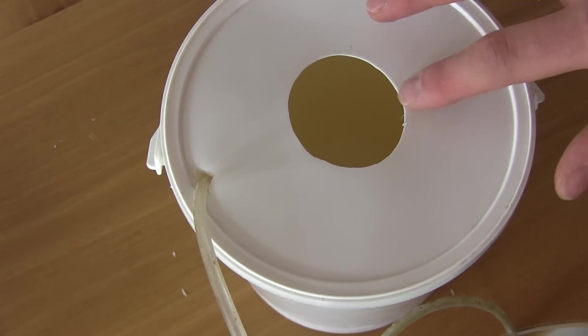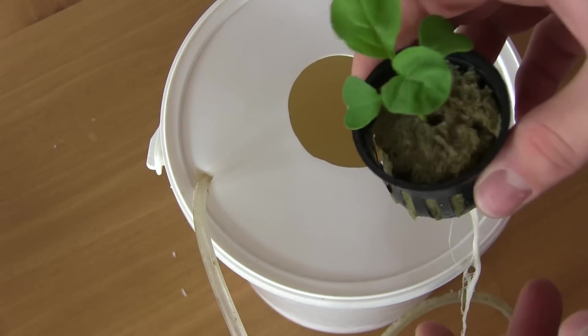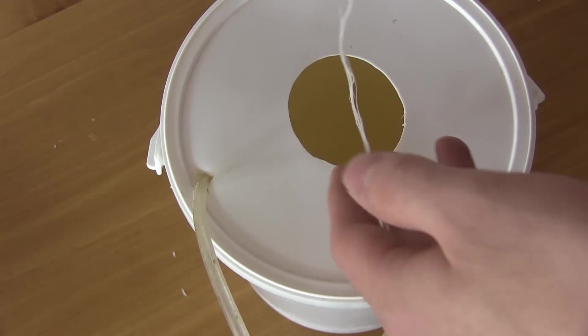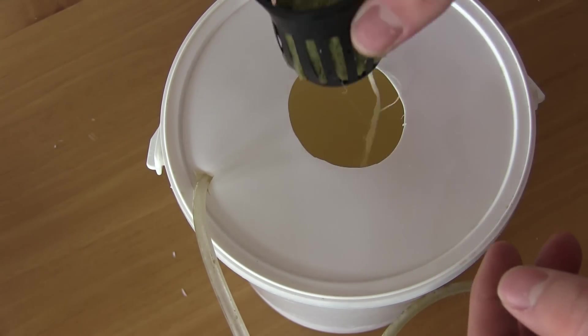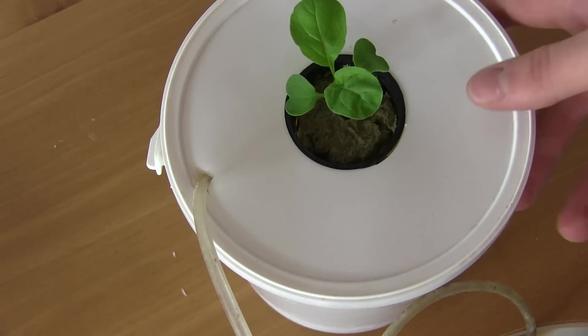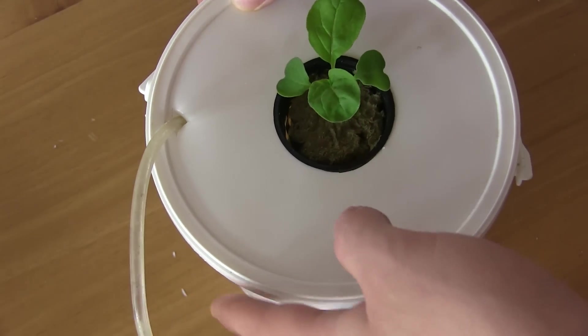And then all we're going to do is put a plant in. Here we have an arugula plant that we've been growing for some time now. It's got some beautiful, nice long roots, and we're going to just drop this right into the bucket there. And we're ready to grow. All we have to do is turn on the bubbler.